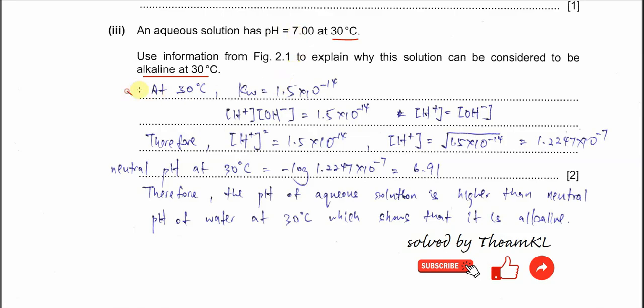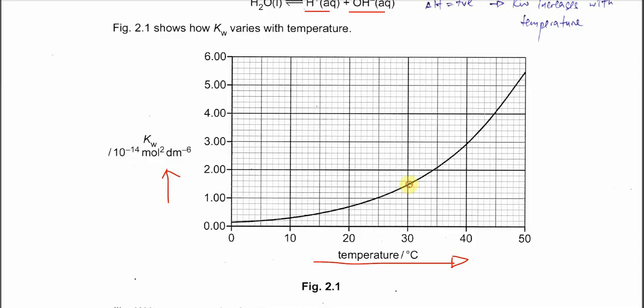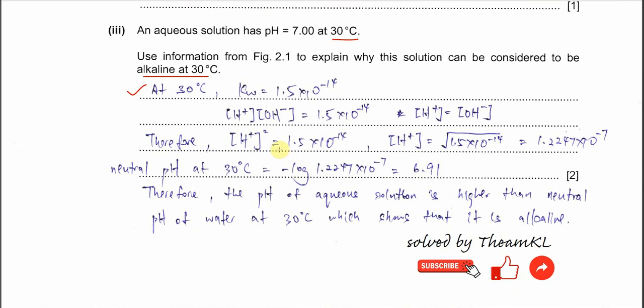First, you need to get information from Figure 2.1 at 30 degrees C. At 30 degrees C, you can get the Kw. Kw is about 1.5 times 10^-14. From the expression, we know that 1.5 times 10^-14 equals these two concentrations. Another thing you need to understand: because it's just water, after it's ionized, the concentration of hydrogen ion and hydroxide must be equal. So the concentration of hydrogen ion squared equals the Kw value.